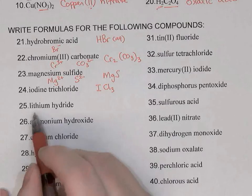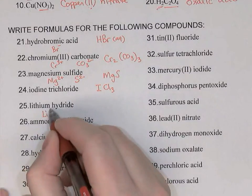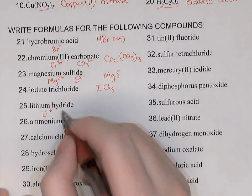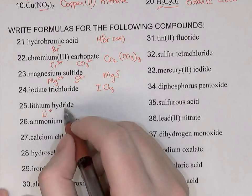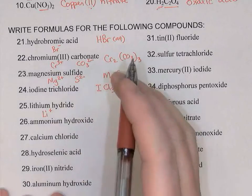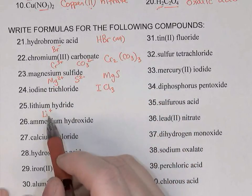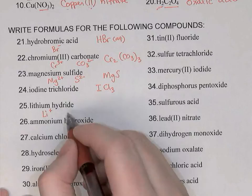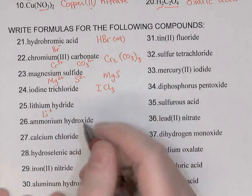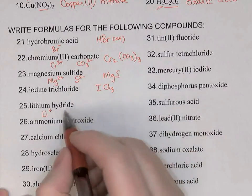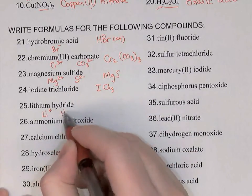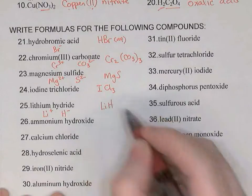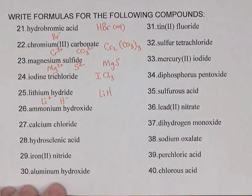Lithium hydride: lithium is an alkali metal, so its charge is +1. Hydride is hydrogen. Now hydrogen would usually be +1 in the first column of the periodic table, but sometimes it can gain an electron and become -1. In this case it must be H- because it's bonded to the positive lithium ion, and LiH will be the formula because +1 cancels -1.